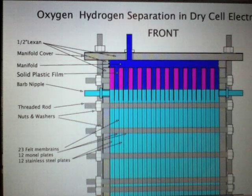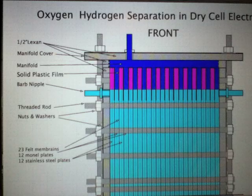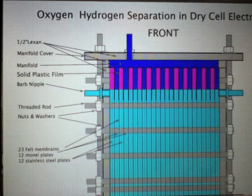Hello there. This is called our oxygen hydrogen separation in a dry cell electrolyzer. This is the front view of it. And there's really no big secret to it at all, even though some people are saying there's a big secret to it.